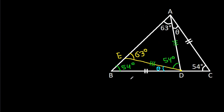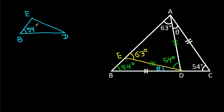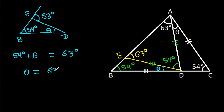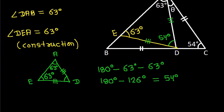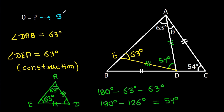Now, in triangle BDE, this angle is 54 degrees, angle theta, and the exterior angle is 63 degrees. So 54 degrees plus theta equals 63 degrees, and theta equals 63 minus 54, so theta is 9 degrees.